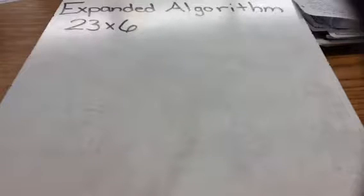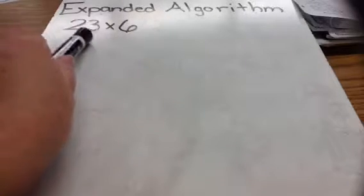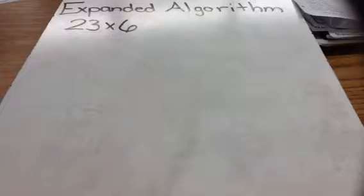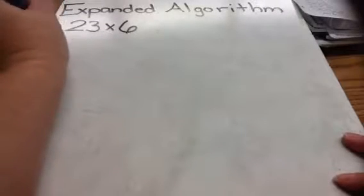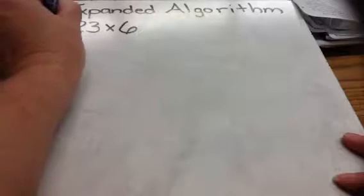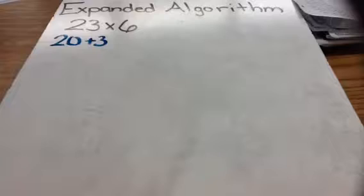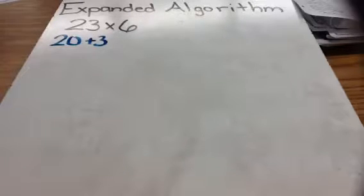The first thing I would do before I even get started is think about what the expanded form of 23 is. I know that if I take 23, I can use the expanded form and change it to 20 plus 3. That's going to help me if I have that knowledge in my brain as I'm doing this expanded algorithm.